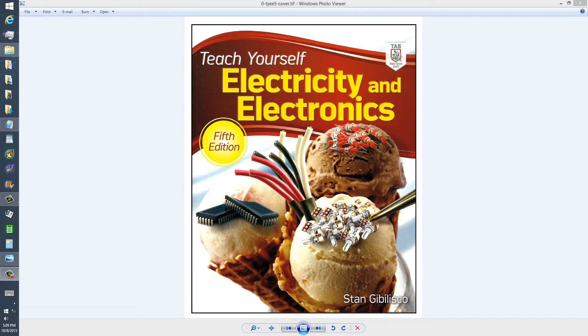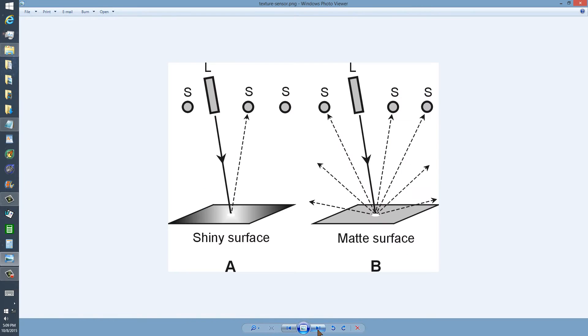A simple concept, a simple method of sensing texture—whether a surface is shiny or matte. How do you pronounce that anyway? I'll have to look it up.